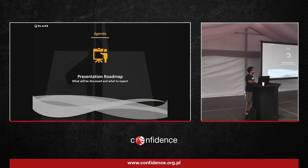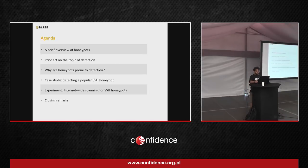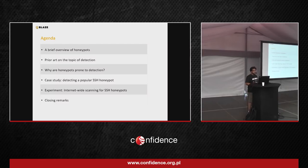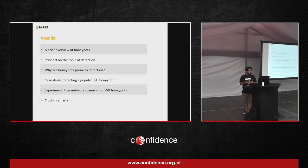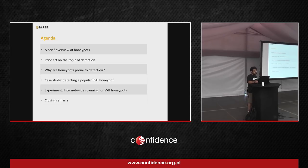Here is a brief roadmap about the presentation — what's going to be discussed and what to expect. We're going to start with a brief review of honeypots, discuss a bit of the prior art — what people have done before in terms of detection. I'll speak about why honeypots are prone to detection, a case study on detecting Kippo and Cowrie, an internet-wide scanning experiment of SSH honeypots, and closing remarks.